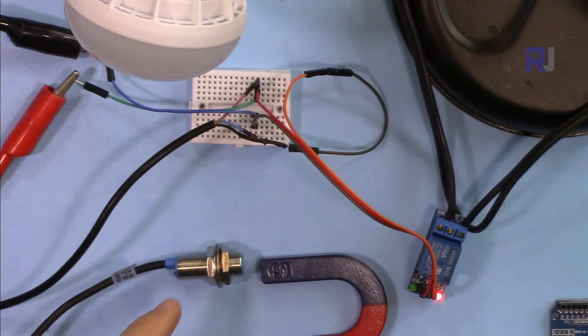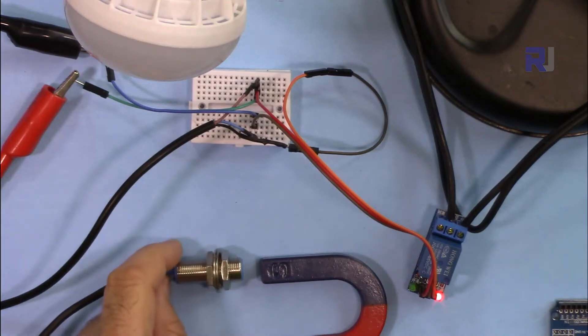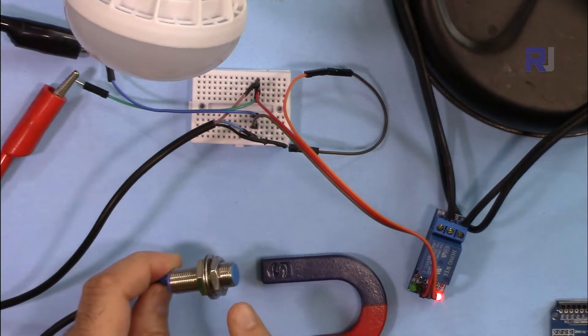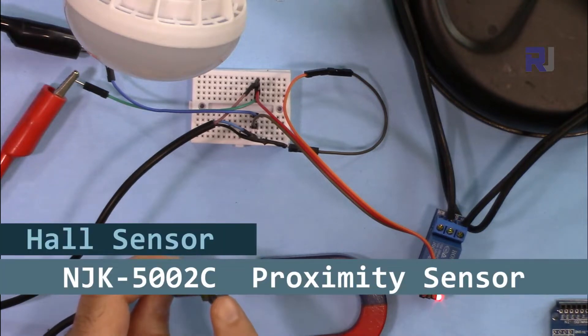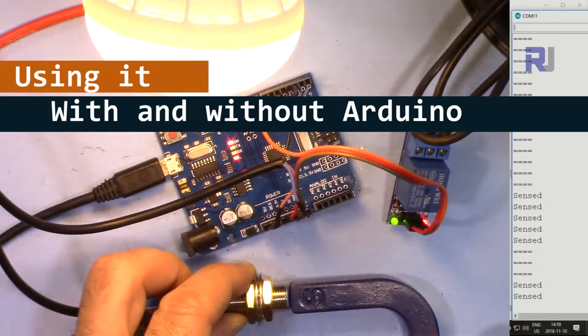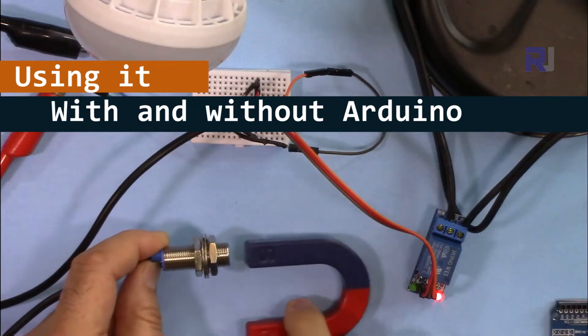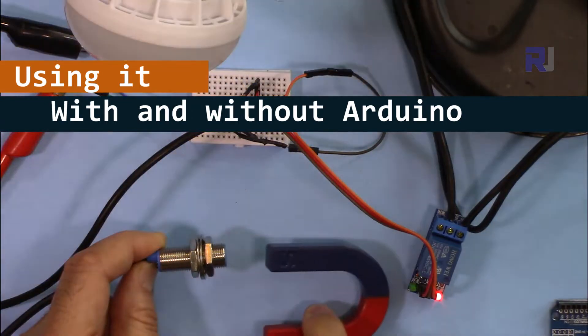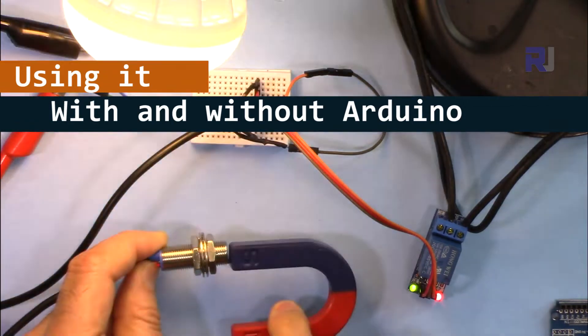Hi, welcome to an Arduino tutorial from Robojax. In this video we are going to test the NJK5002C Hall magnetic sensor. When a magnet comes closer, it will turn on and off an AC bulb using magnetic field detection.